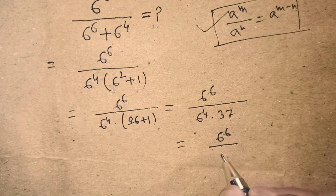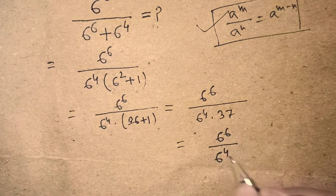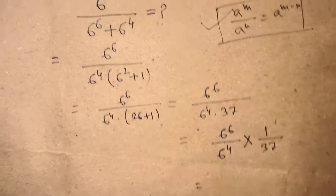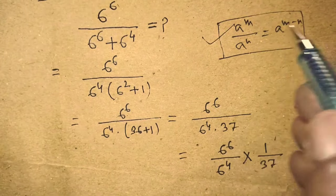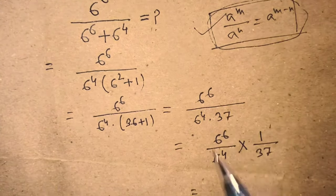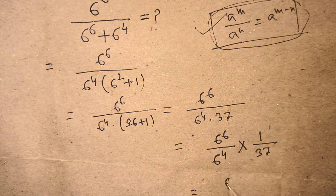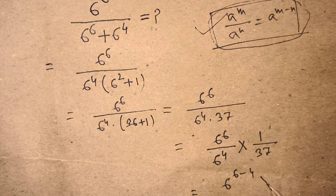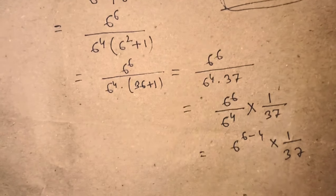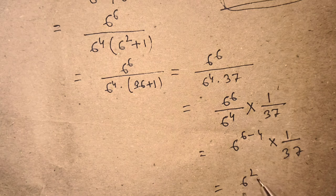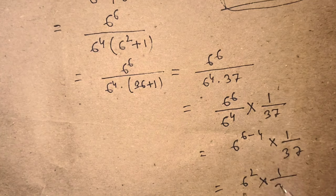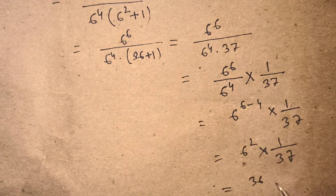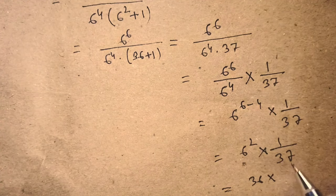According to the exponent rule, we can write this as 6 to the power 6 over 6 to the power 4, times 1 over 37. Applying the rule gives us 6 to the power 6 minus 4, which is 6 to the power 2, times 1 over 37.